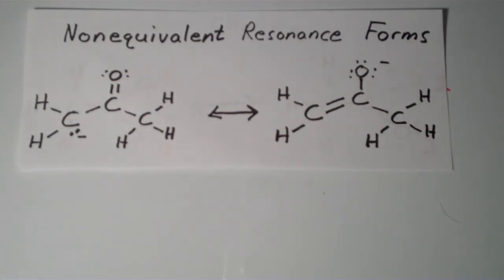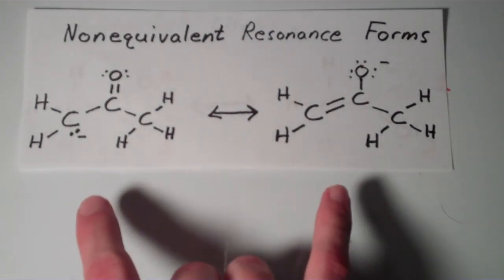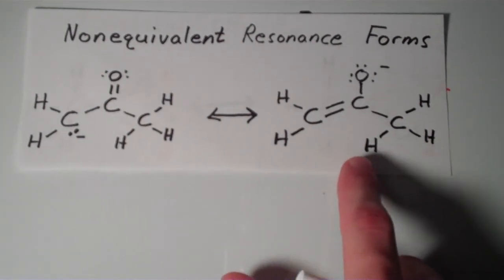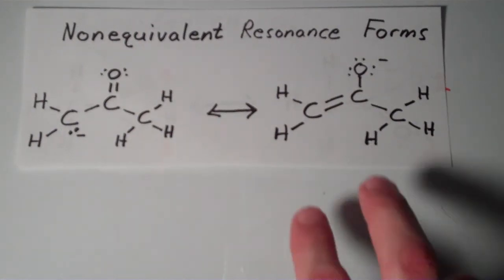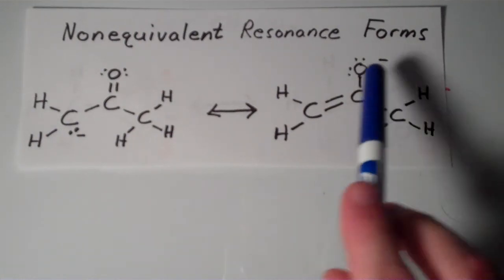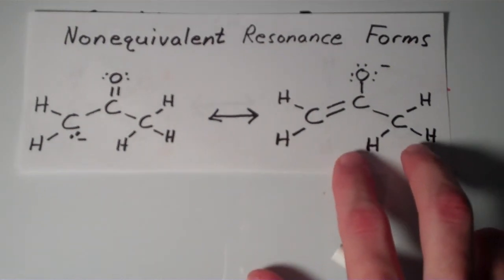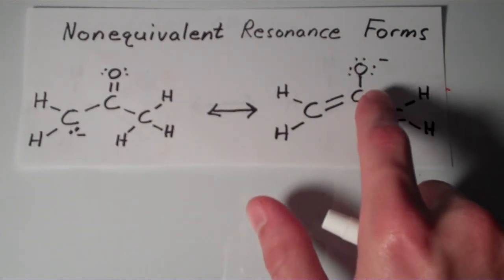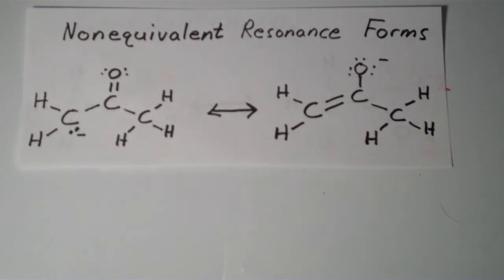So when resonance forms are not equivalent, usually they don't contribute equally. So in other words, the true structure of the conjugate base of acetone may be more like one of the resonance forms than the other. I would expect, in this particular case, I would expect the resonance form here on the right to be a large contributor. And the reason why is because there's a negative charge on the oxygen rather than carbon. And since oxygen is a more electronegative element, basically in this resonance form, the negative charge is placed on an atom that is better equipped to accommodate it. So, that's just an example of two non-equivalent resonance forms.